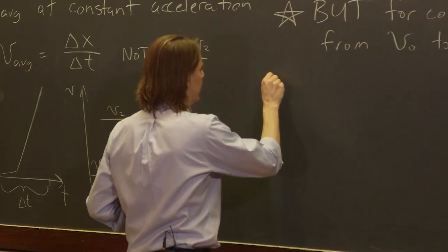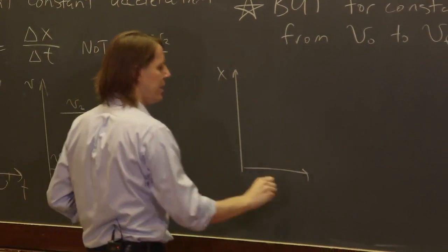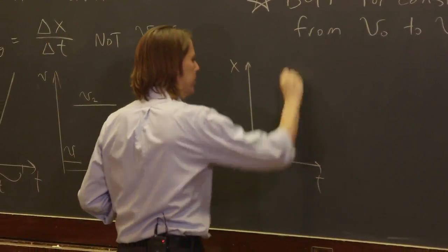In that case, then, let's draw, remember, what it would look like. A constant acceleration problem looks something like this. Here's x and here's t. And remember, it kind of goes off like that.